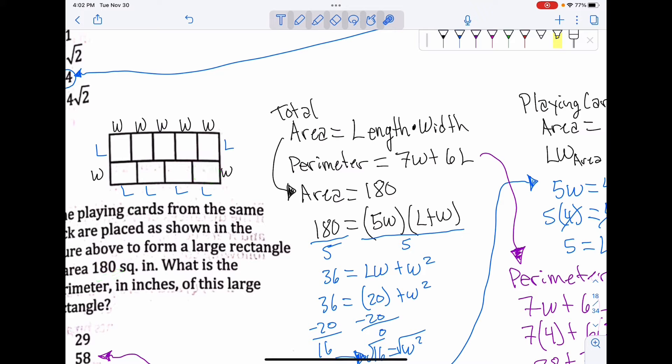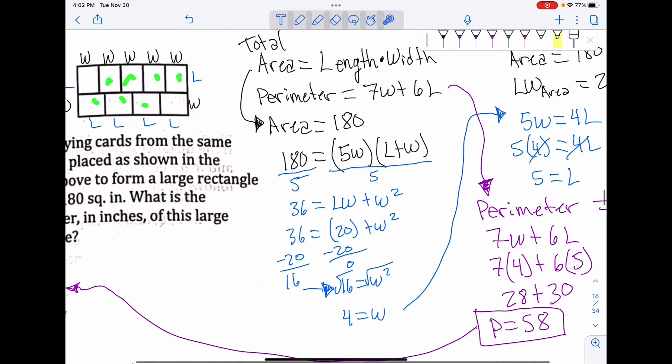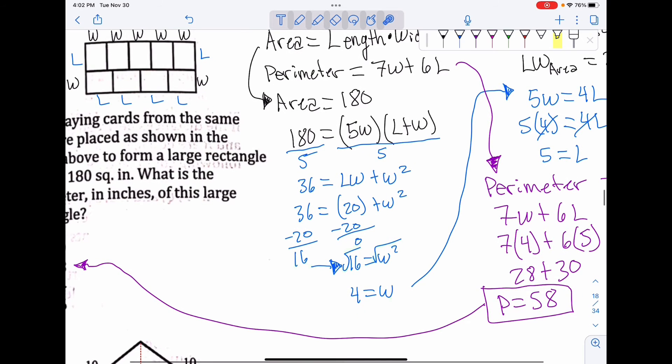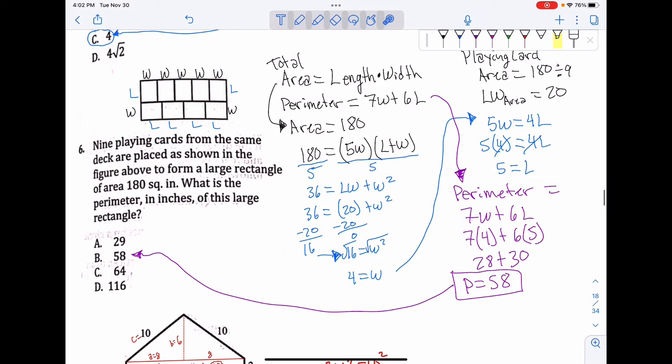So then I plug it in: 36 equals w² + 20. Subtract 20 from both sides, get 16. w² equals 16, square root both sides, w equals 4. We're not done yet. We move over here: 5w equals 4l. This is the same length.